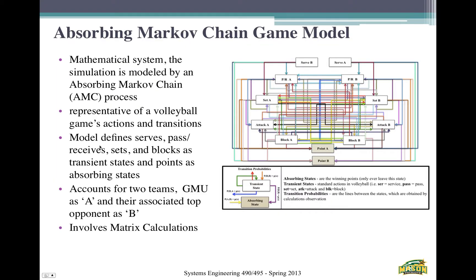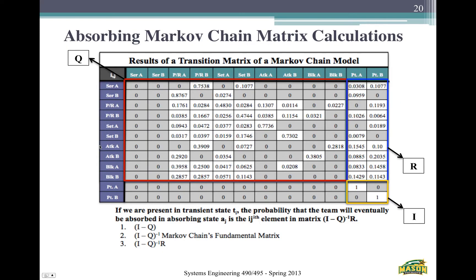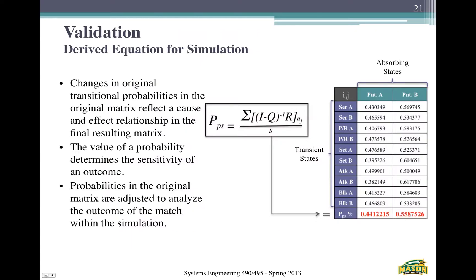This is our absorbing Markov chain game model. It has absorbing states shown in beige and transient states shown in white. It starts with a serve from team A or team B and goes through all transitions that could occur. The Q matrix is the transient state matrix, the R matrix is the absorbing state matrix, and the identity matrix I is expanded to a 10x10. Calculations 1 through 3 at the bottom are used to calculate the probability of eventually reaching an absorbing state.